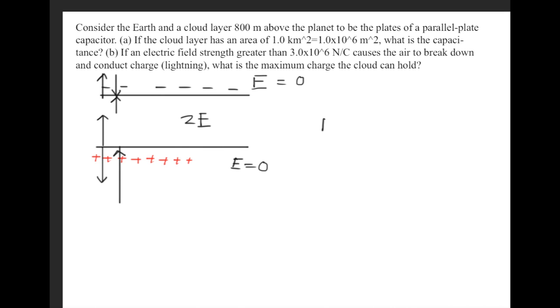So we already said that from one plate, the E-field is sigma over 2 epsilon naught. So what we'll do is we'll add these vectors right here. So that will give us an E-field of 2 sigma over 2 epsilon naught.